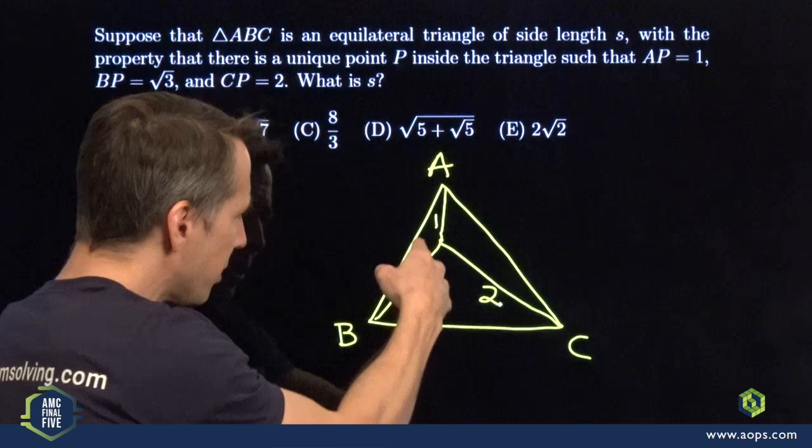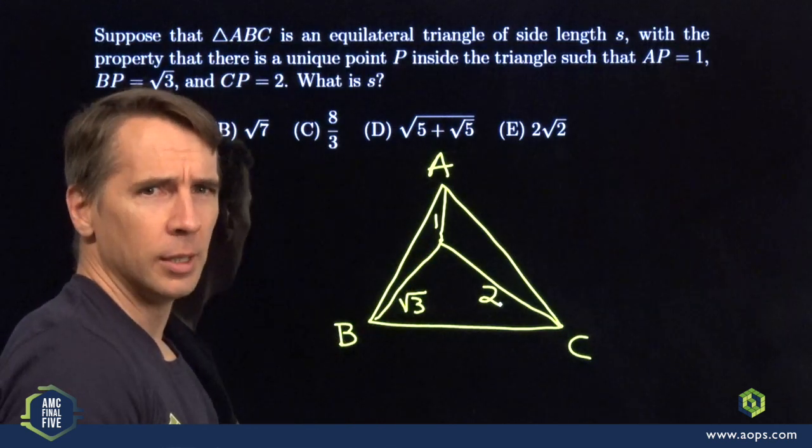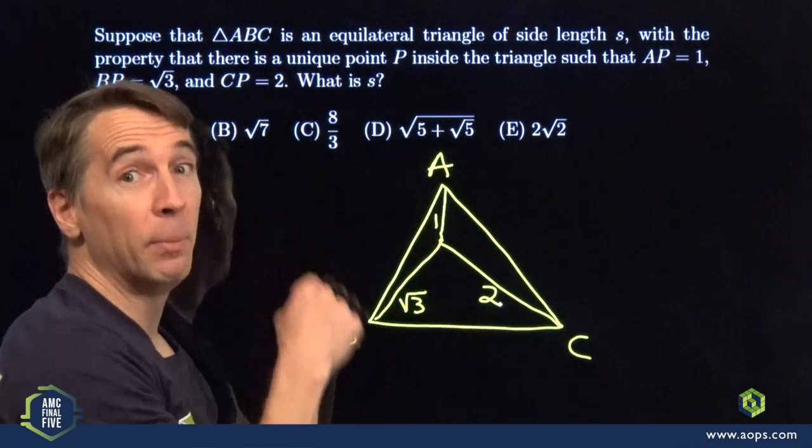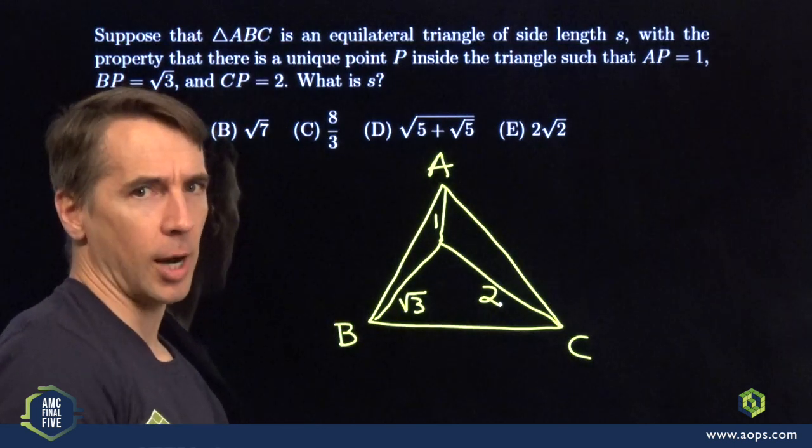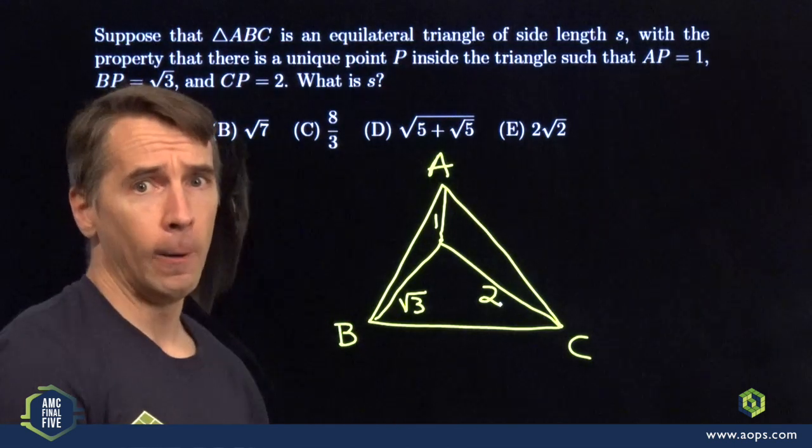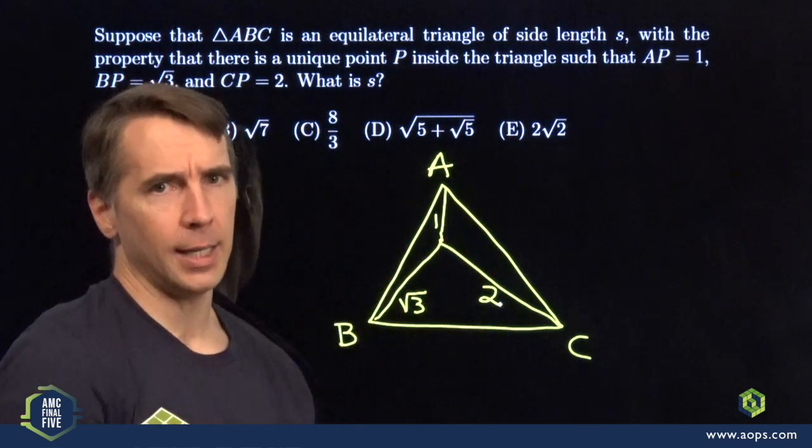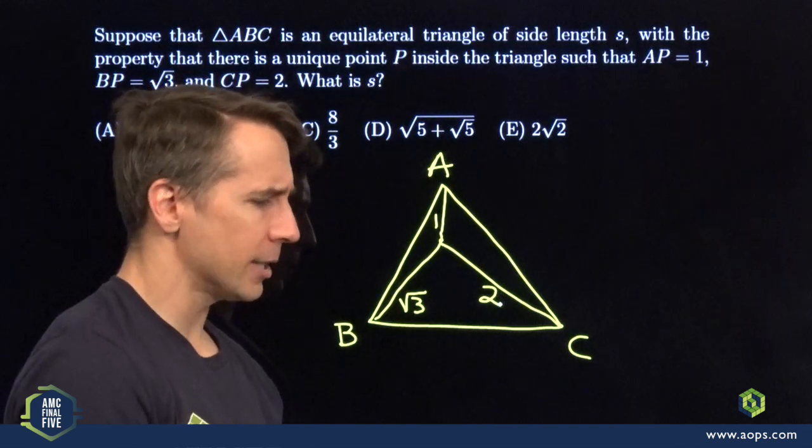But these three lengths all come out of the same point. Triangles don't work like that. We're going to have to build that 30, 60, 90 triangle. But how? So I'm going to start thinking of transforming this diagram, reflecting it, rotating it. Which of those would be best?